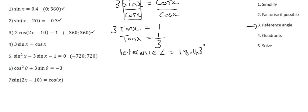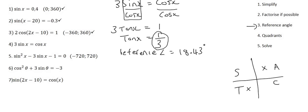Moving on to step four, we have to look at the quadrants. For a tan graph we only have to look at one quadrant. Tan x is positive here, and from our CAST diagram we know that tan is positive in quadrant three and quadrant one — you can choose whichever one you like. Let's go with quadrant one, so we just say x equals 18.43. I'm not going to say 180 minus or 180 plus because we're in quadrant one.